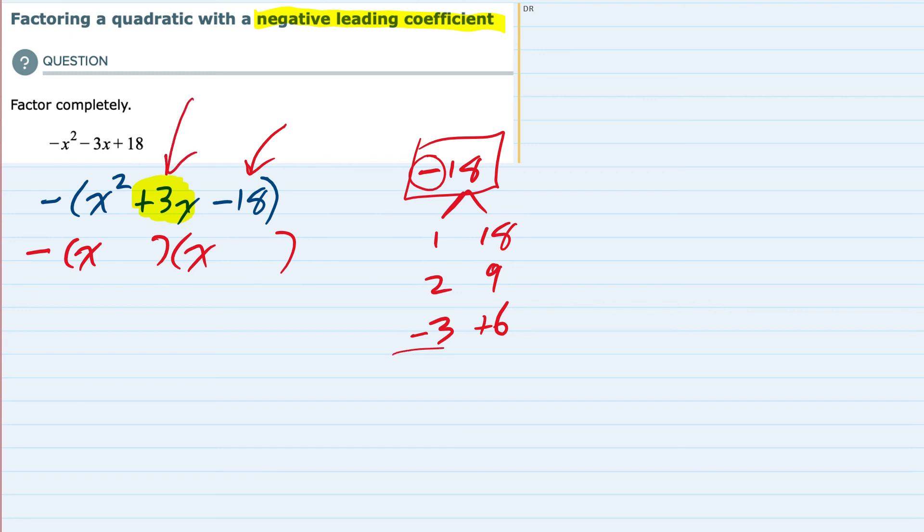So these are my two terms. I'm just going to move them over here, minus 3 and plus 6. I could FOIL this out to check it, but for now I think we're good. I factored out the negative, and I factored the quadratic inside the parentheses.